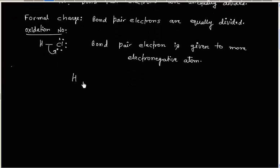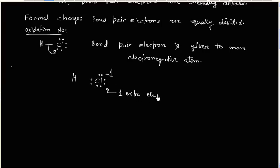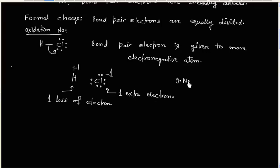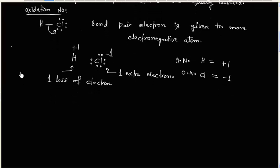Looking at this molecule, chlorine will have 8 electrons, so the oxidation number of chlorine is minus 1, because it has 1 extra electron. Neutral chlorine should have 7 electrons, but right now chlorine has 8 electrons — that is 1 extra electron. So it has minus 1 oxidation number, and hydrogen has a loss of 1 electron, giving it plus 1 oxidation number.